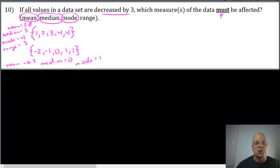The range before was 4 minus 1, which is 3. Now I have 1 minus negative 2. Subtracting is the same as adding the opposite. One minus negative 2 is the same as 1 plus 2, which is 3. So my range equals 3. My range didn't change, so I can cross off range.